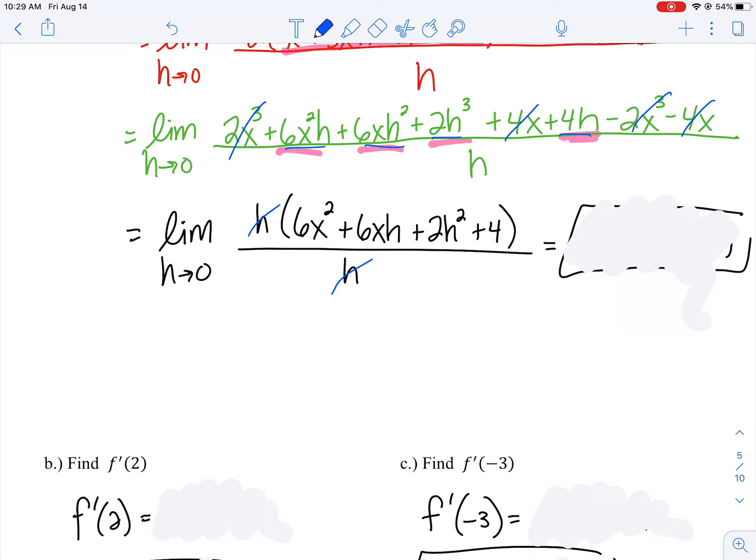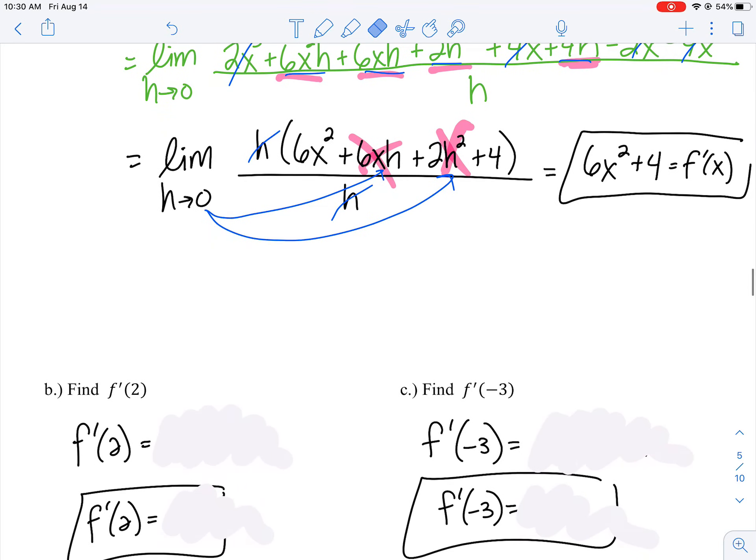Let's smush those two points close together. Plug in 0 for h and do direct substitution. Those two terms should cancel out - 0 times anything is 0. You should have left over as your derivative: 6x² + 4. So the derivative, the instantaneous rate of change, is 6x² + 4.